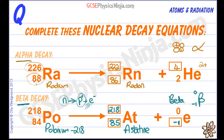What about alpha? Well, 88 is 86 plus 2. And 226 is 222 plus 4. So all the numbers should add up on each side of the equation, just like a math sum.